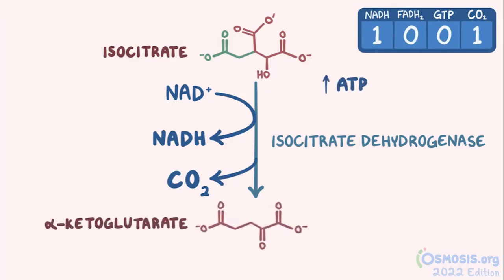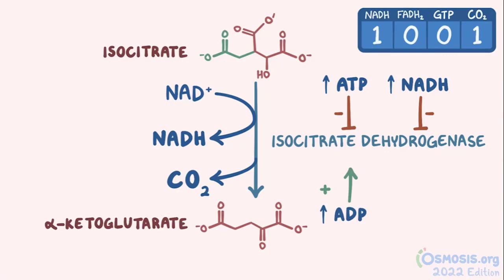High levels of ATP, as well as high levels of NADH in the cell, can inhibit isocitrate dehydrogenase, signaling the cycle to slow down since the cell has plenty of energy. On the other hand, high levels of ADP — an ATP precursor — stimulate this enzyme, signaling the cycle to speed up since the cell needs more energy. Isocitrate dehydrogenase is considered the rate-limiting step of the whole cycle. Additionally, calcium levels rise during muscle contraction, which requires energy, so calcium also activates isocitrate dehydrogenase.